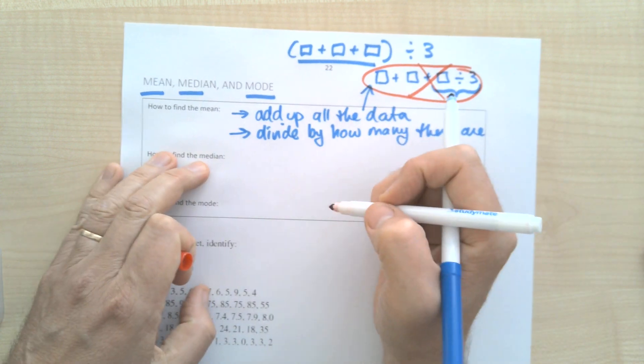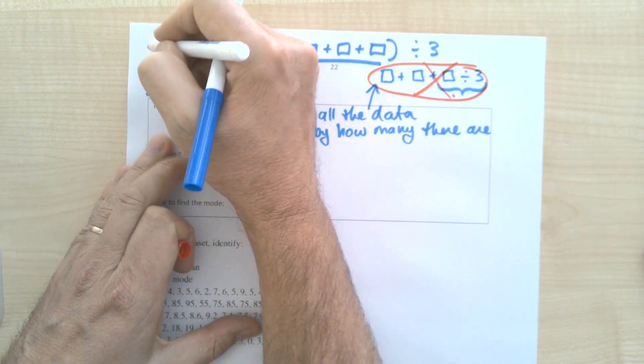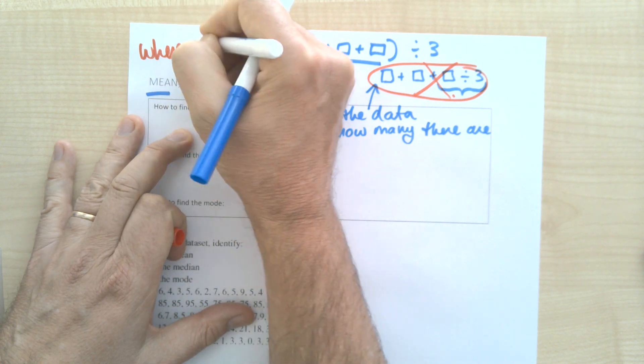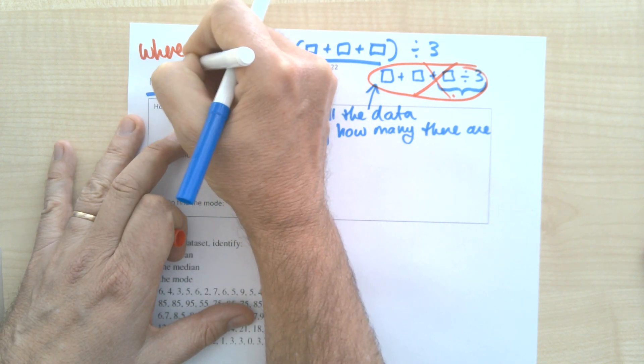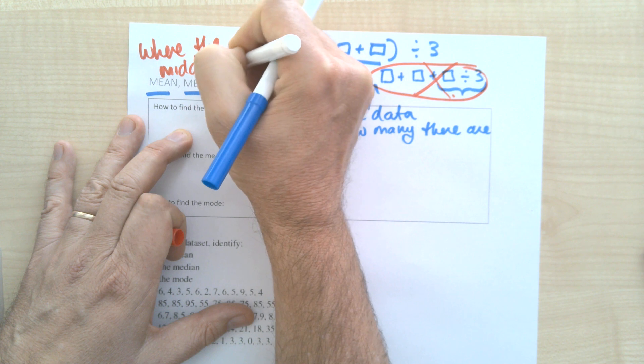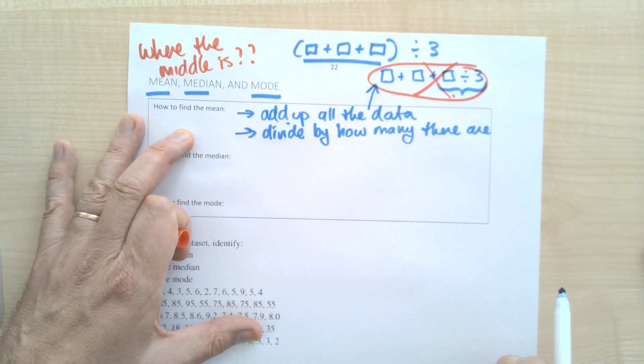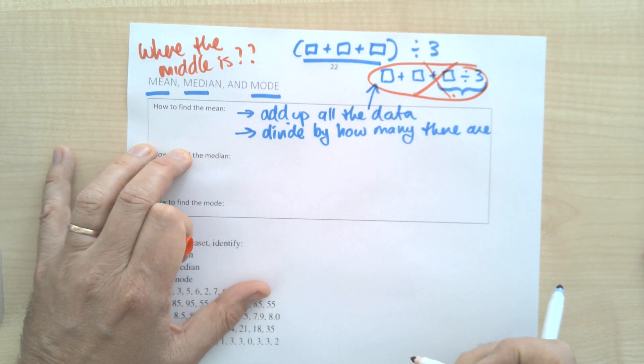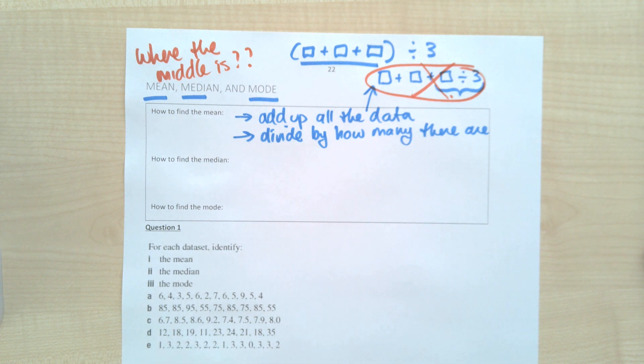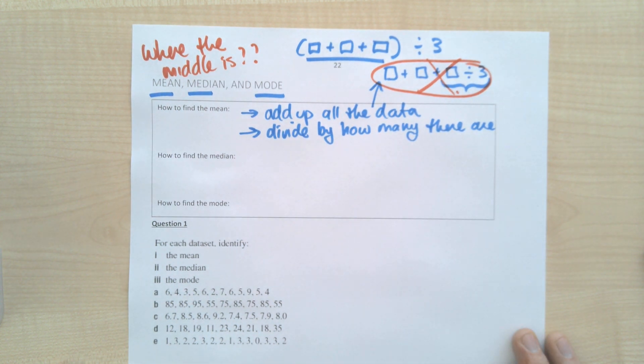This is all about central tendency, or in other words where the middle is. If you've got some data, where is the middle of the data? So your answer should be somewhere in the middle.